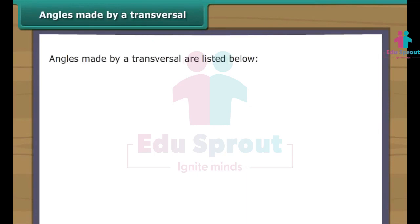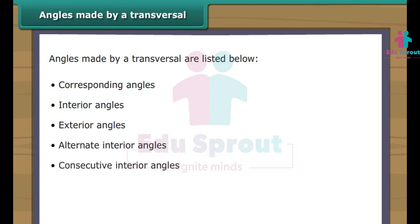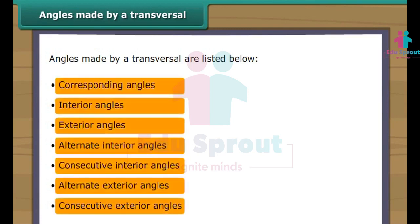Transversals form seven types of angles. They are described as corresponding angles, interior angles, exterior angles, alternate interior angles, consecutive interior angles, alternate exterior angles, and consecutive exterior angles. Click each button to know more about the above-mentioned angles.